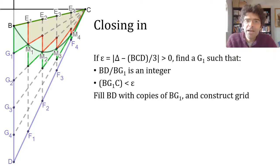And then there's some fraction of BD, which we're going to call BG1, such that the triangle BG1C is less than that difference in areas. And then we split BD completely into units of the length BG1, and we make a sort of grid by connecting each of them to C. I'm drawing verticals through points where the parabola cuts those oblique lines.